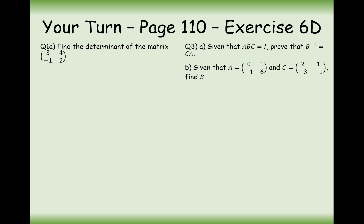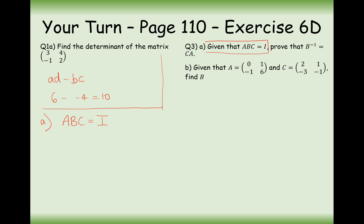Have a go at these two questions. The first one is straightforward — working out AD minus BC: 6 minus (-4) gives 10. For question 3a, given that ABC = I, prove that B⁻¹ = CA. When it says 'given that', you start your algebra at that point. We're showing this algebraically using algebra manipulation.